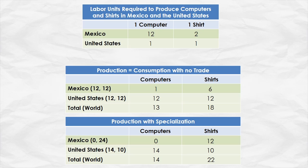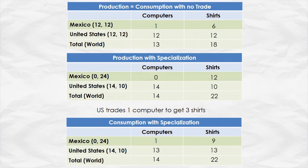Notice, however, that Mexico doesn't have any computers, and the United States has fewer shirts than before. So is there a way to make both countries better off? Well, clearly since total production has gone up, there is. Let's take a look at how to do that.